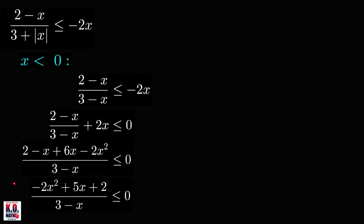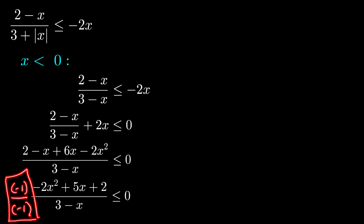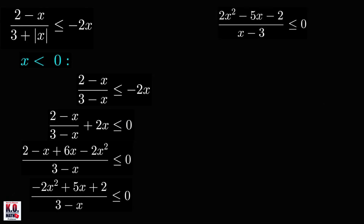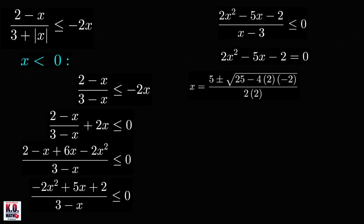If we multiply the numerator and denominator by negative 1, which doesn't change the direction of the inequality, we'll get the inequality 2x squared minus 5x minus 2 all over x minus 3, less than or equal to 0. Again, let's solve this inequality using a sign chart. First, let's find the values of x that will make our numerator equal to 0 by solving 2x squared minus 5x minus 2 equals 0. Because this trinomial is not factorable, we use the quadratic formula and get x equal to 5 plus or minus the square root of 41, all over 4.